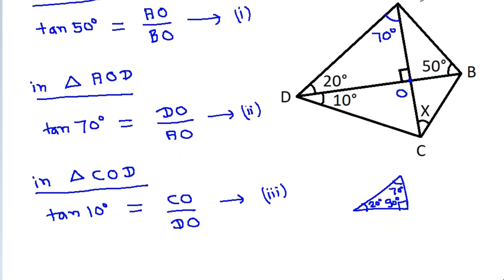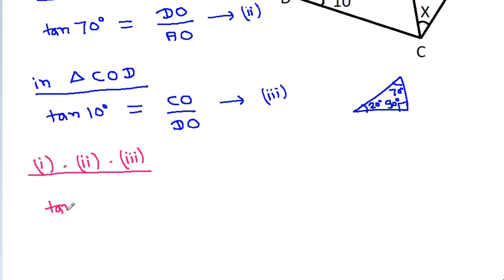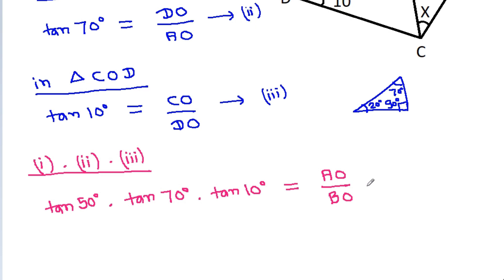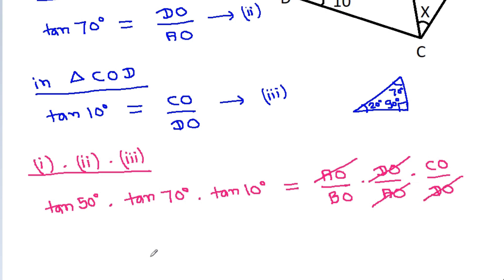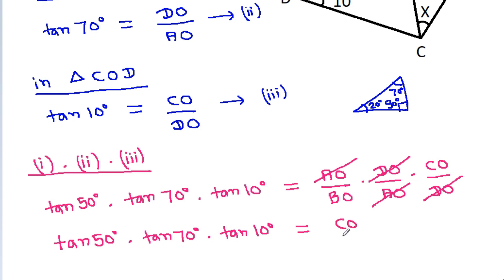And if we multiply equation 1, equation 2, and equation 3, then we will get: tan 50 degrees times tan 70 degrees times tan 10 degrees is equal to AO by BO, times DO by AO, times CO by DO. And AO will get cancelled, DO will get cancelled. So it is tan 50 degrees times tan 70 degrees times tan 10 degrees is equal to CO by BO.